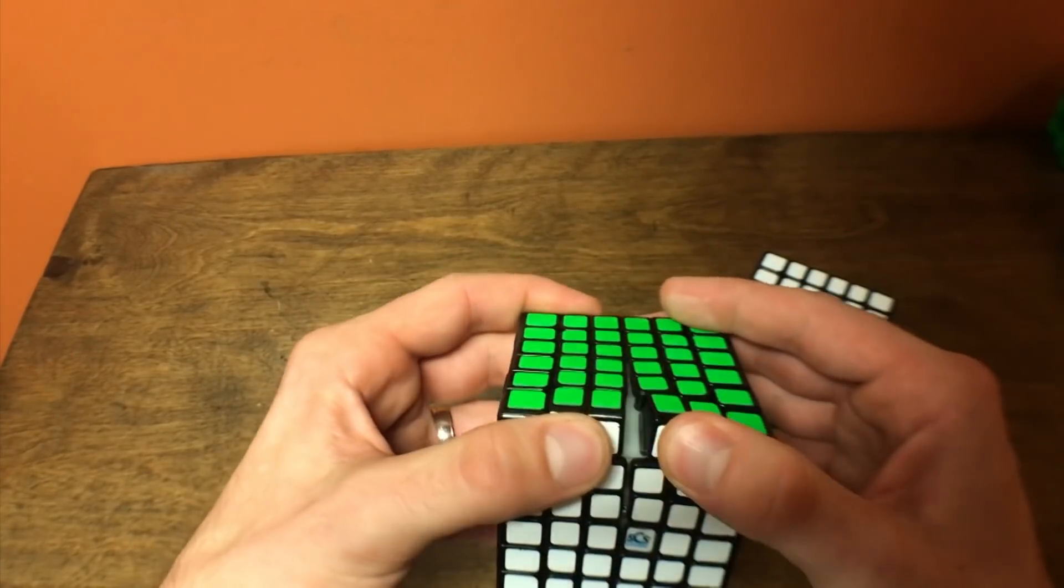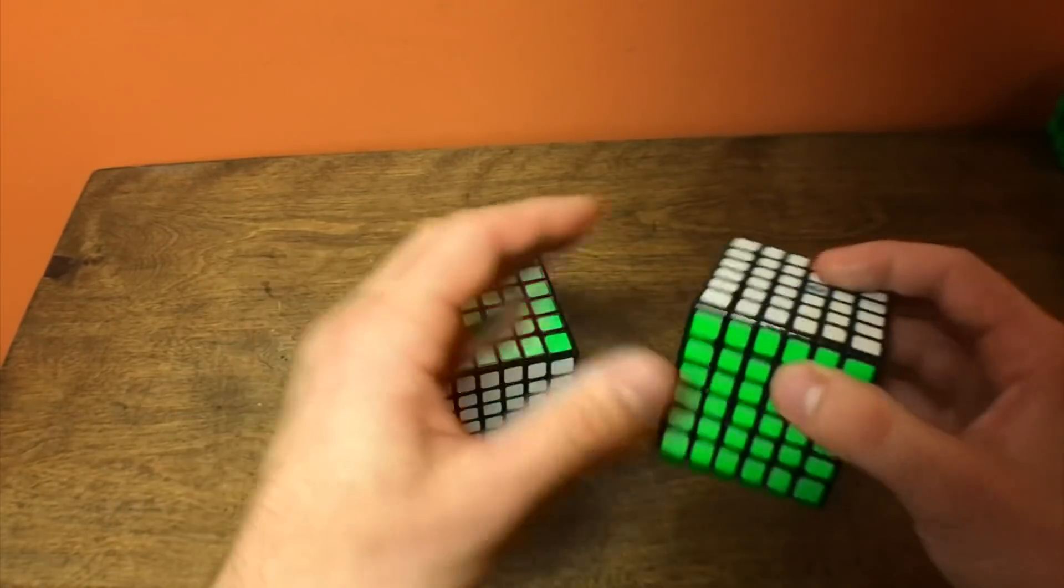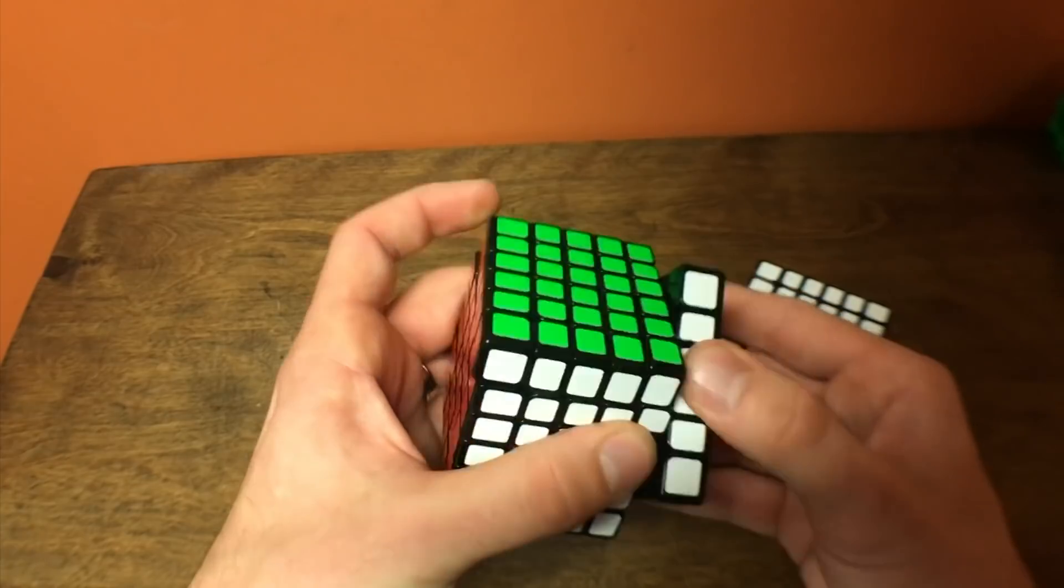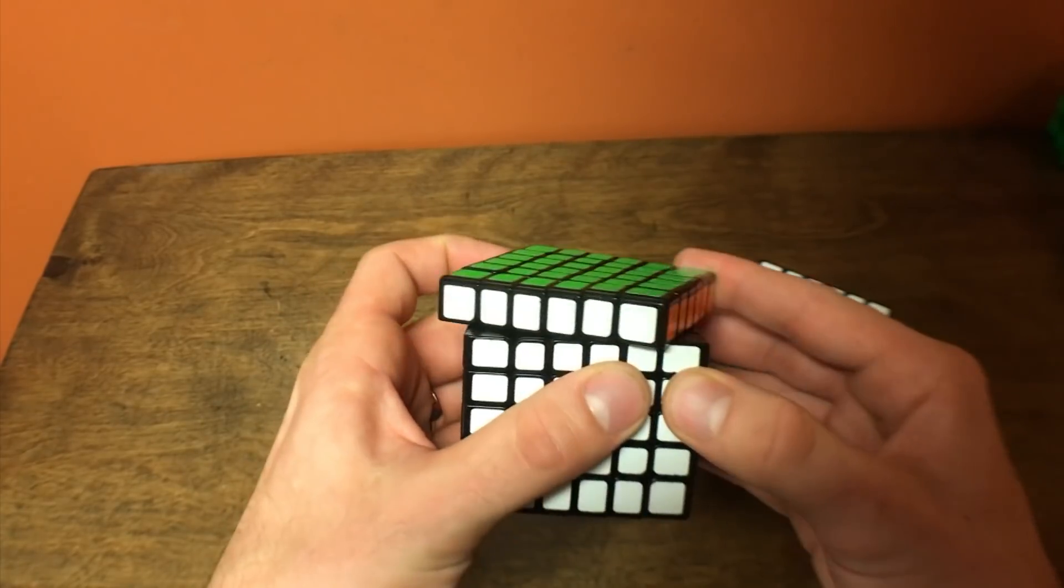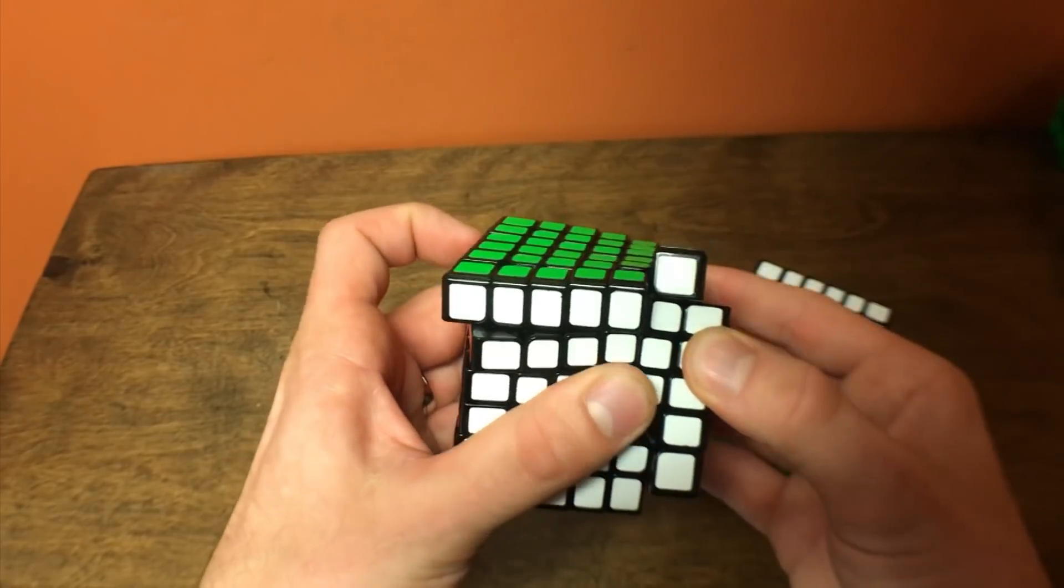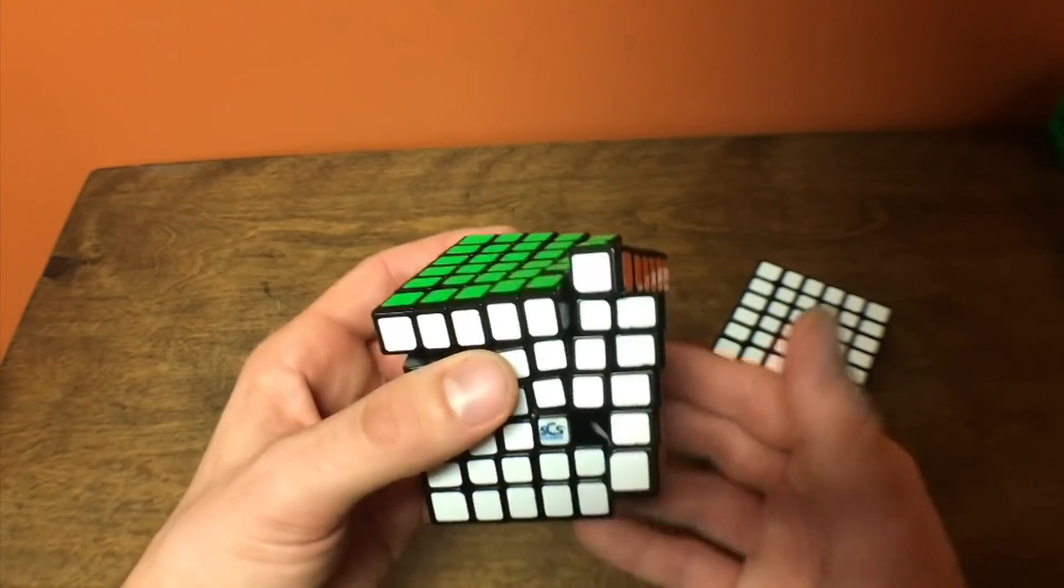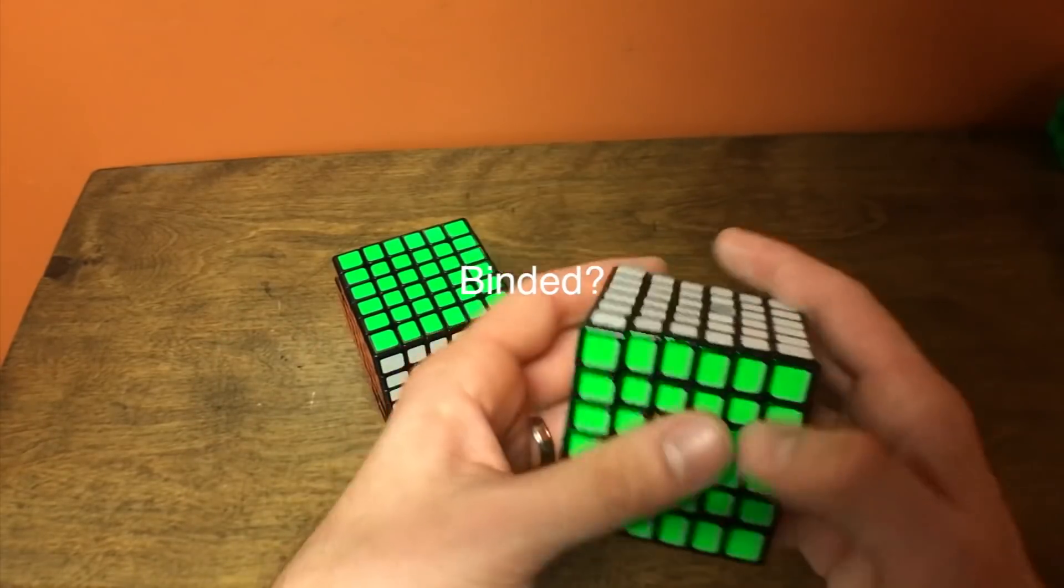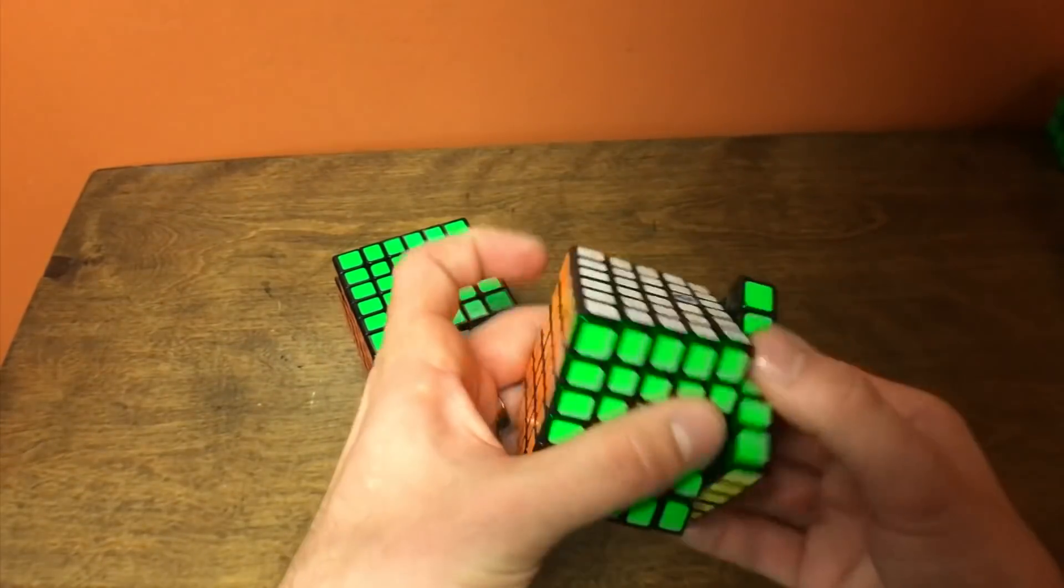As far as tensioning, I'm able to keep the Wuhua at lighter tensions than the Yushin Red, and the reason is because it doesn't misalign as much. So I'm able to have a little bit more corner cutting on this for sure, and it does misalign, but it doesn't really get too bound up.